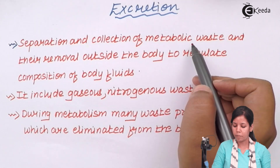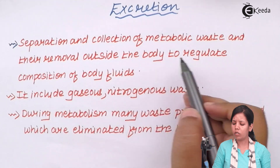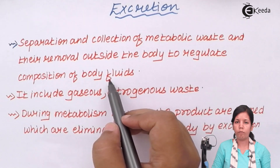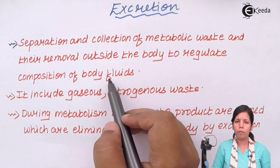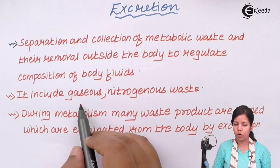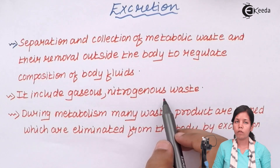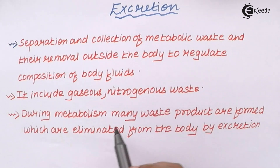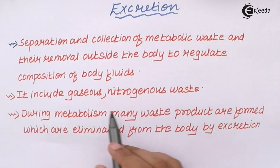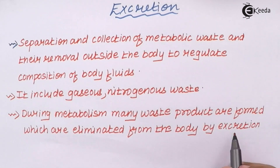This metabolic waste must be removed outside the body in order to keep balance and to regulate the composition of body fluids like lymph, blood, or even water levels. This nitrogenous waste includes gaseous waste as well as nitrogenous compounds like NH3, uric acid, or ammonia in certain organisms. During metabolism, many waste products are formed which have to be eliminated from the body by the excretion process.